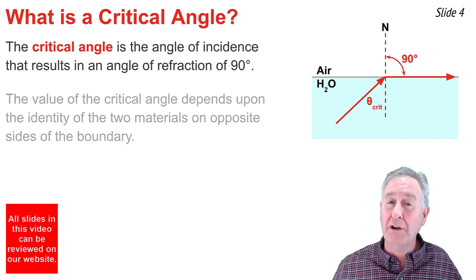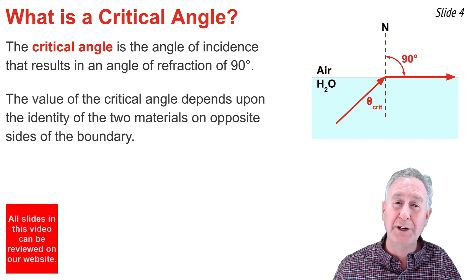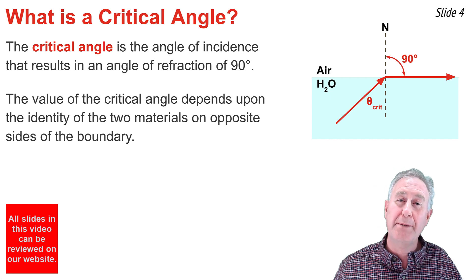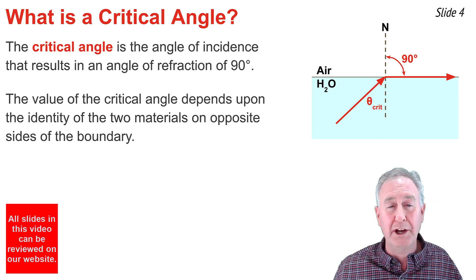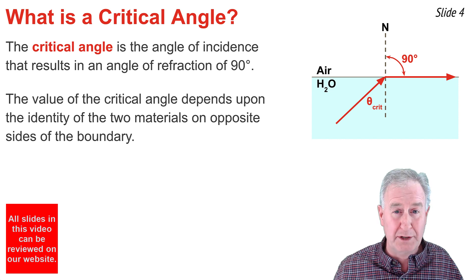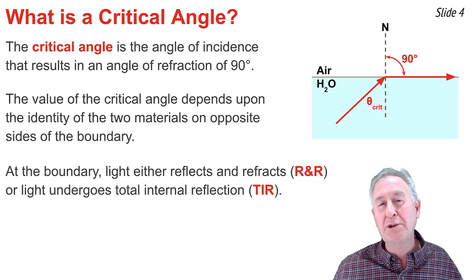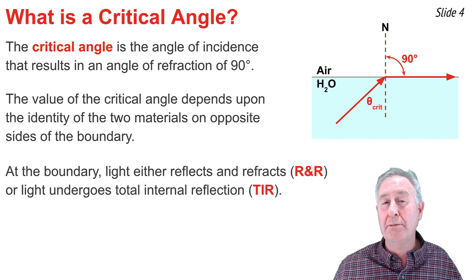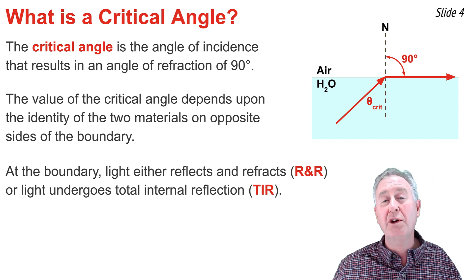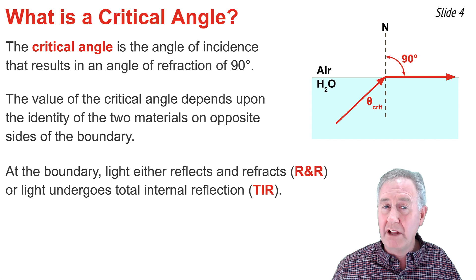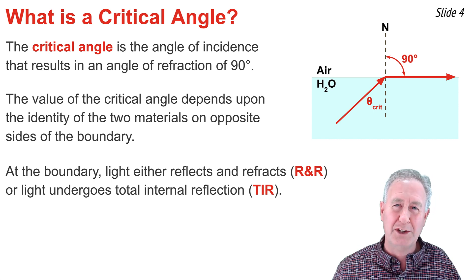The actual numerical value depends upon the identity of the two materials on opposite sides of the boundary line. It will be a different value for the water-to-air boundary than for the glass-to-air boundary. When light approaches a boundary, it can be guaranteed to undergo one of two types of behaviors: either reflection and refraction, or total internal reflection.